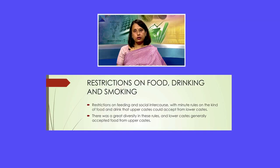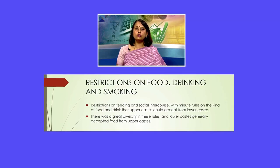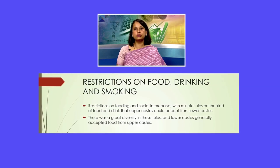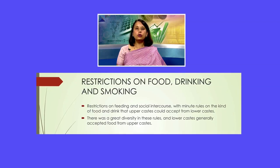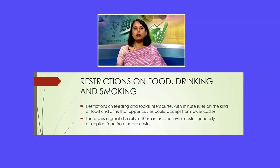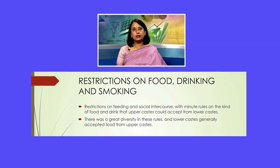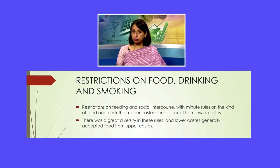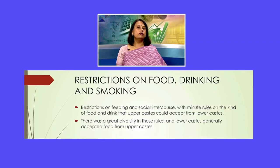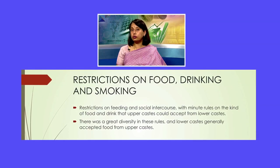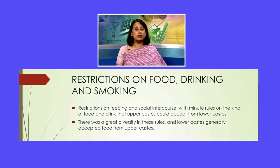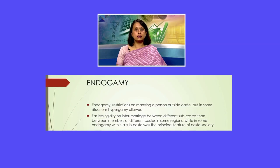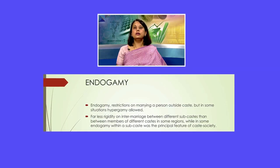Another characteristic is restrictions on food, drinking, and smoking — also called commensal relationships. Different caste groups could not interact randomly; there were strict rules about food and drink. Generally, only pakka food was accepted by higher castes from lower castes, not kaccha food. Pakka food was cooked in ghee, while kaccha food was cooked in water — so dishes like khichdi or dal were not acceptable to higher castes, whereas food fried in ghee was considered pure.